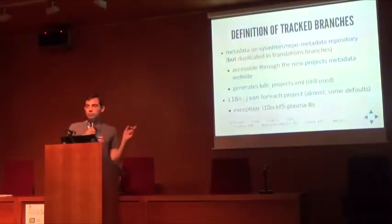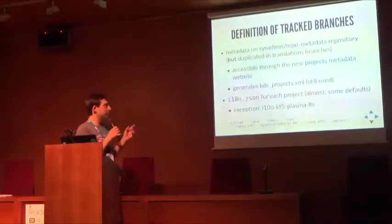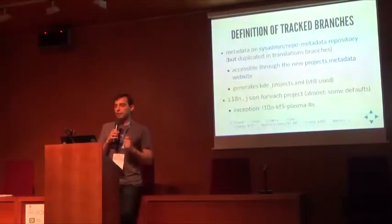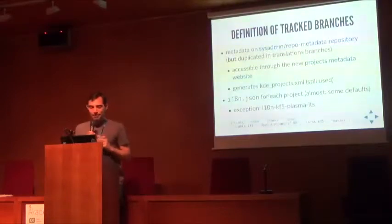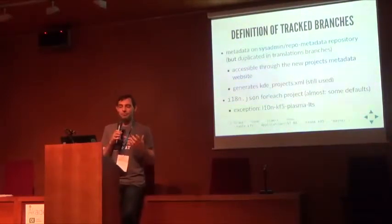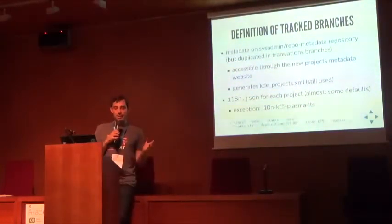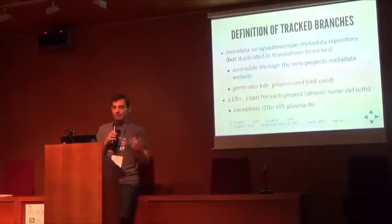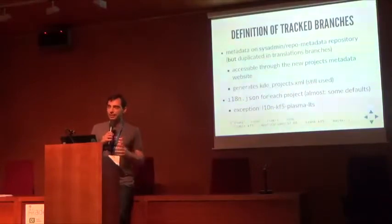Where are all these definitions? The source of truth should be the repo metadata repository, but we also have this information indicated in translation branches — for historic reasons. Sometimes people forget to update the translation branches, so strange things can happen. We created a separate definition and manually update it. This is not efficient, and we want to remove it and have just one source of truth, but we need to check carefully that nothing will break.